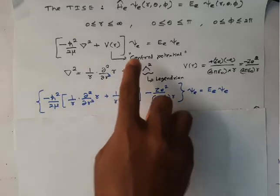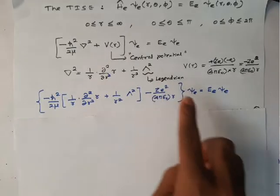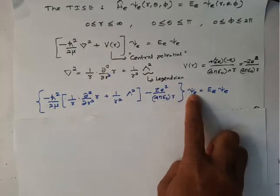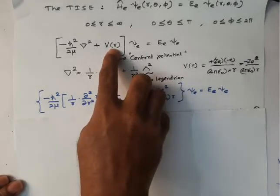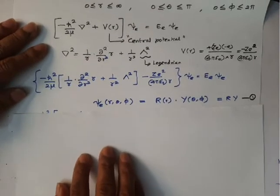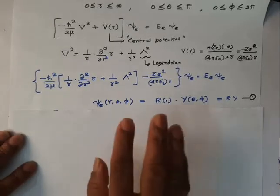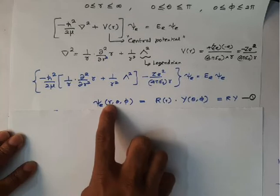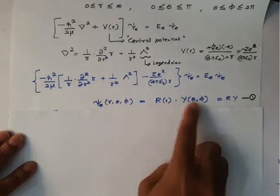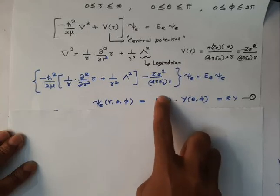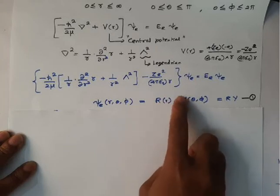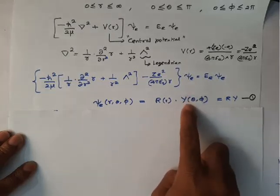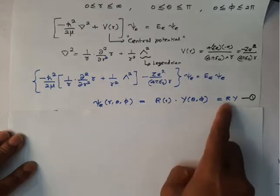By applying the method of separation of variables, the wave function ψ(r,θ,φ) can be separated into two parts: a radial function R(r) and an angular function Y(θ,φ), so ψ = R·Y, where Y is nothing but the spherical harmonics. I substitute R·Y into the Schrödinger equation. The operator ∂²/∂r² acts only on R (so Y can be treated as a constant and factored out), and the Legendrian operator acts only on Y (so R can be factored out).